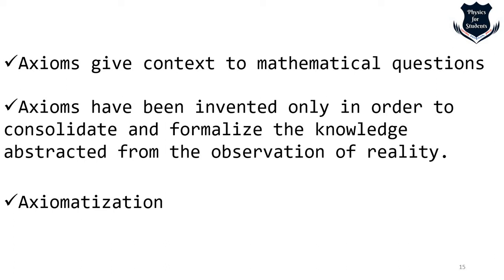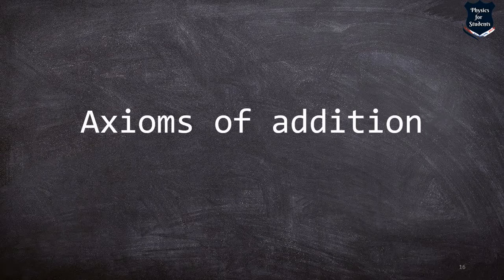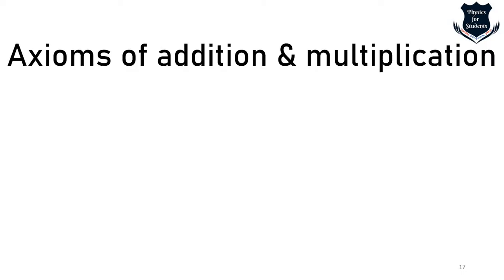Axioms have been invented in order to consolidate and formalize knowledge abstracted from the observation of reality. Even assumptions about simple things like a straight line have profound effects on the resulting mathematics. Without axioms, we would not be able to share the same basic assumptions with other people — and mathematics is all about axioms and deductions. Axiomatization is a formal method for specifying the content of a theory, wherein a set of axioms is given from which the remaining content can be deduced as theorems. The biggest example is Bertrand Russell's Principia Mathematica, which tried to reduce arithmetical laws to simple logic — later disproved by Kurt Gödel through his incompleteness theorem.